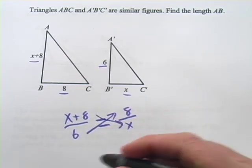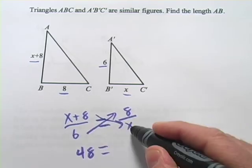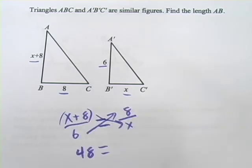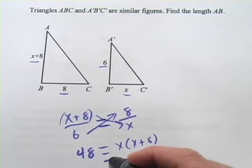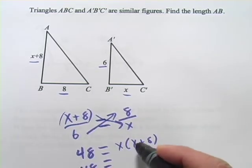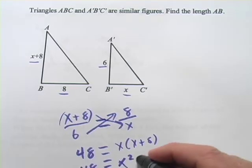Now here, 6 times 8, that's 48. That's pretty easy. On the other side, we get X times, and it's got to be times that whole quantity. So X times X plus 8, and that is X times X is X squared. X times 8 is 8X.